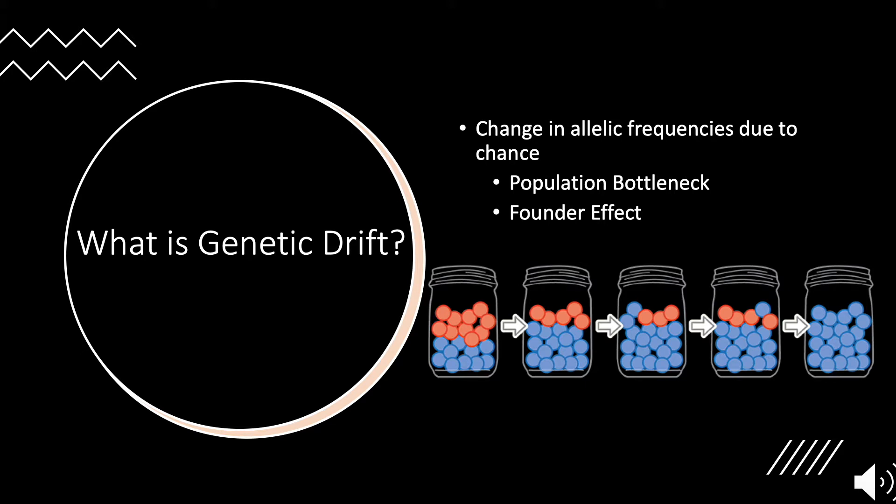Let's start with this image here. This image of these jars with beads in them is basically a representation of real-life species and what occurs. So what exactly happens here? We have chance events occurring, and what it does is that it changes the ratios of our allelic frequencies in the population.